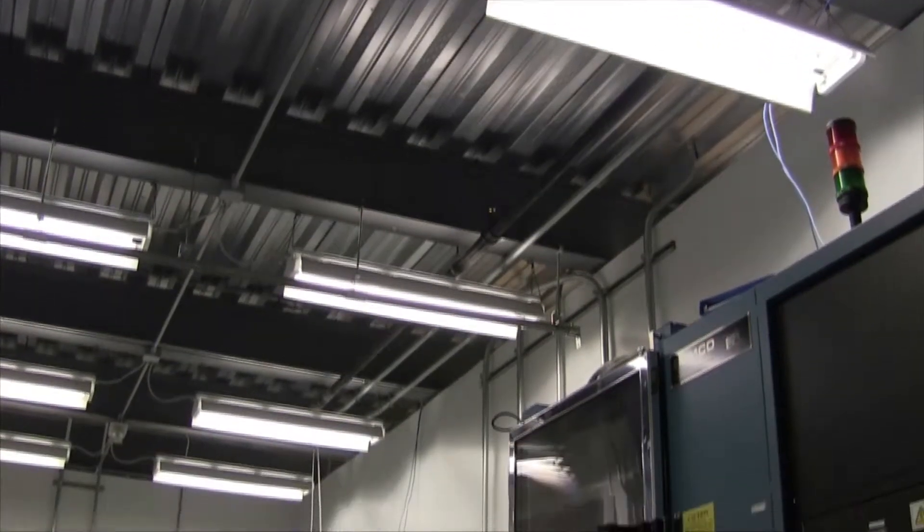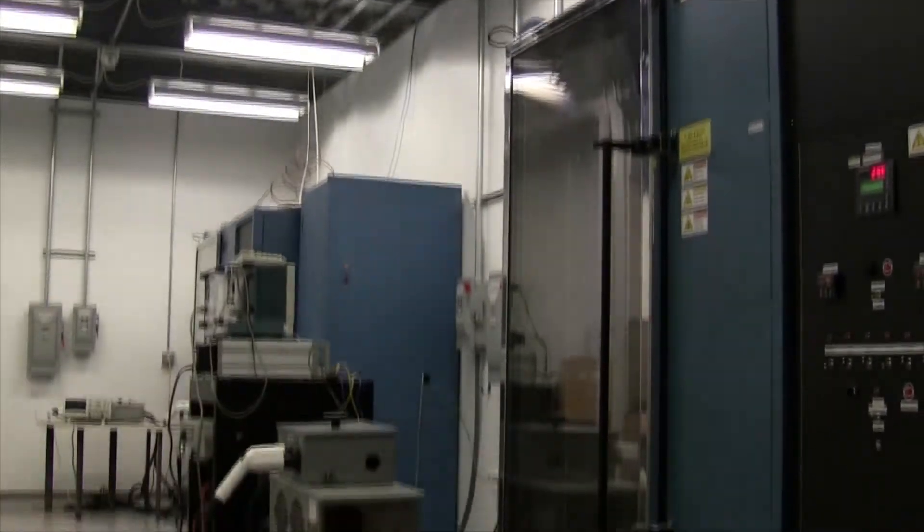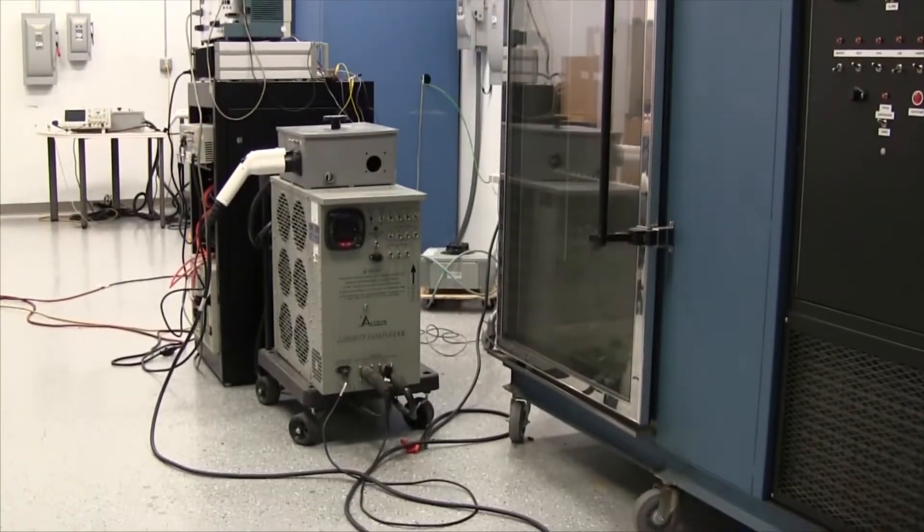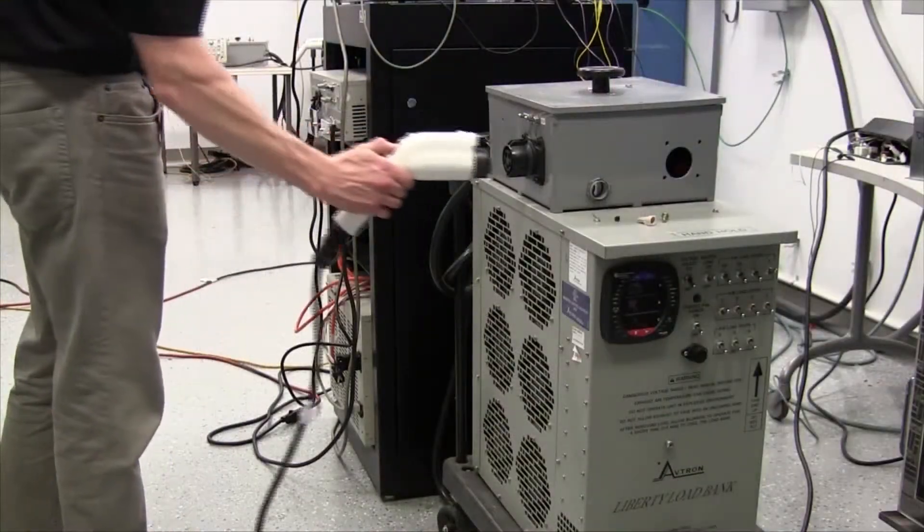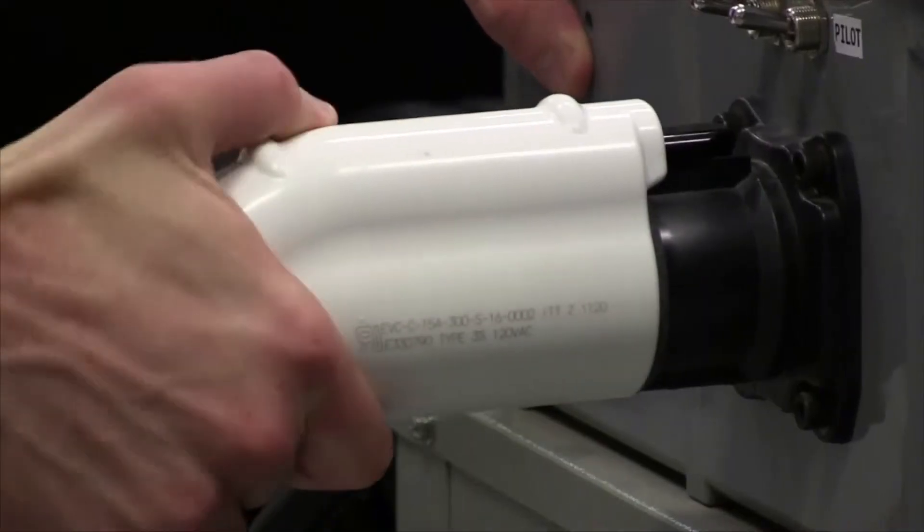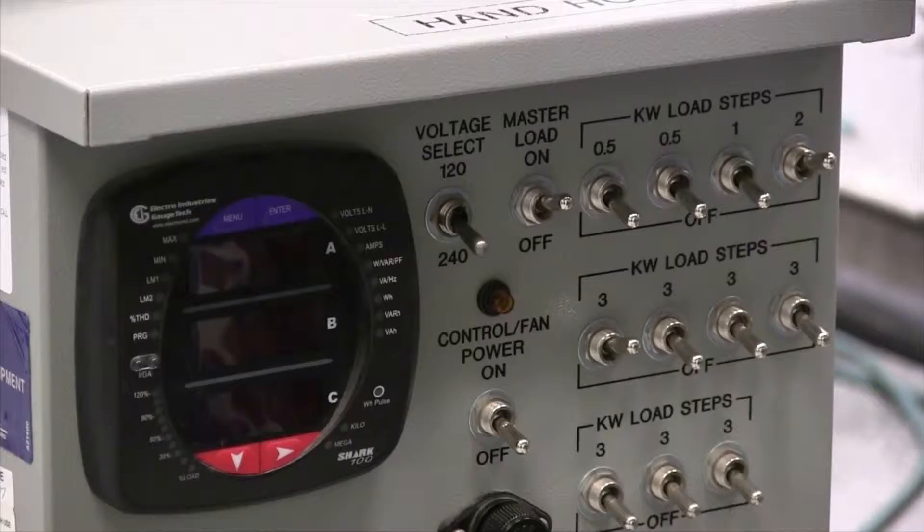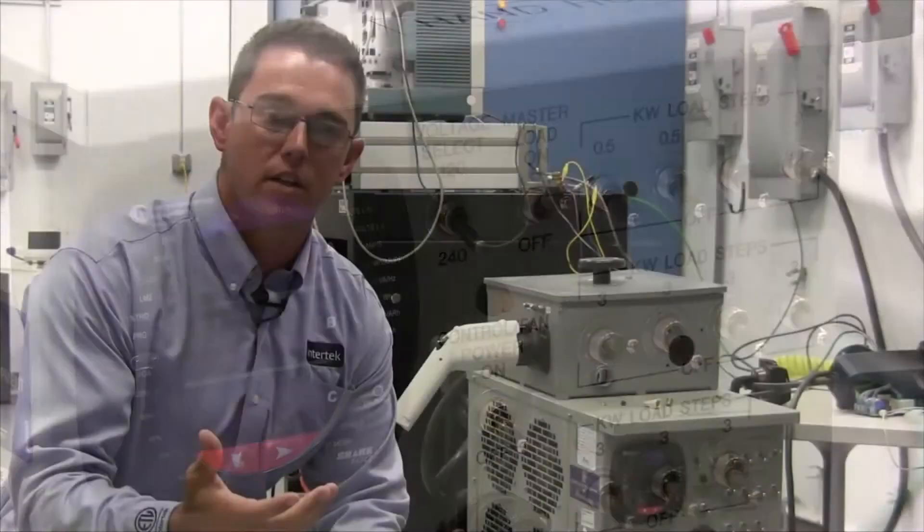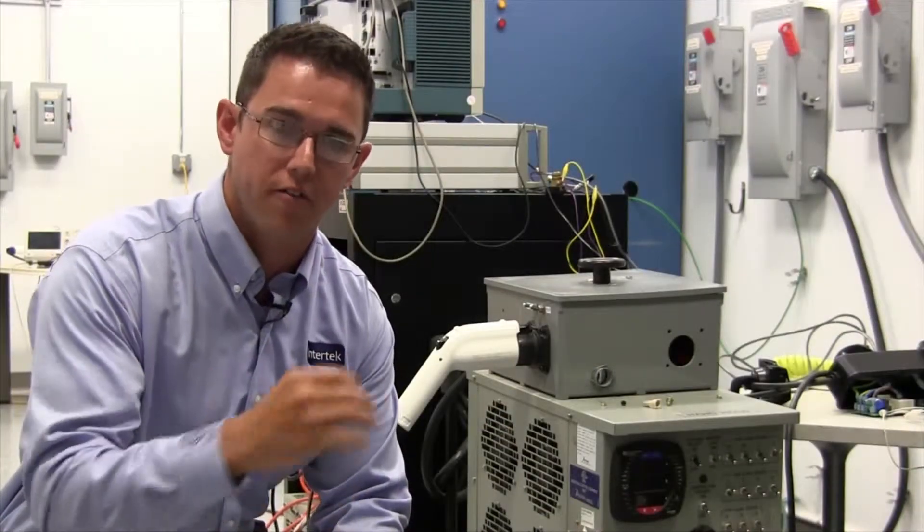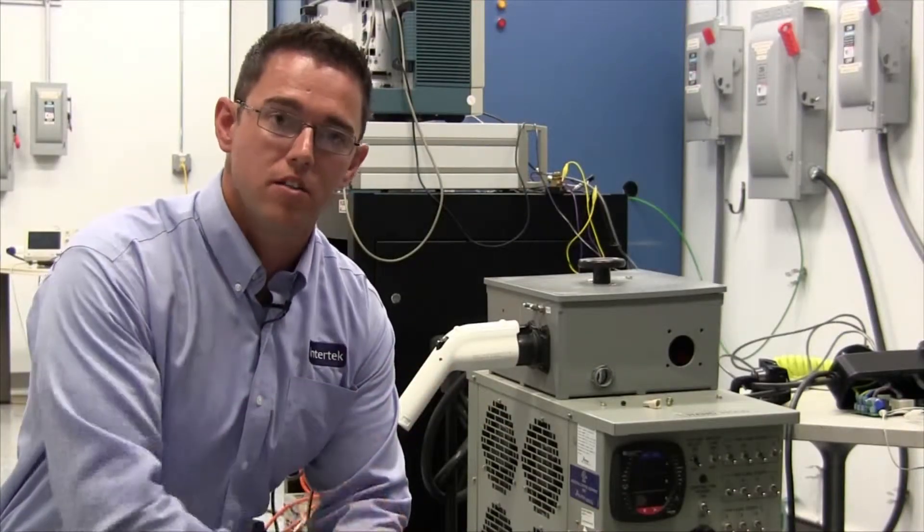Here in the product safety testing lab we have a couple pieces of equipment that are set up to simulate an electric vehicle. The reason that's done is to create the load that the charge station needs to see in its in-use state. What that allows us to do is expose the charge station to a number of different potential fault creating scenarios such as over current.